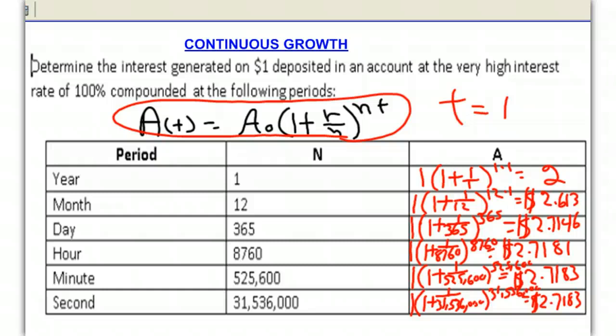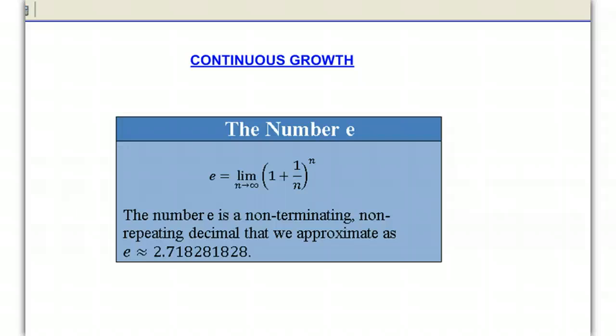It turns out this is something we call a limit, and the limit is E. So just to summarize: E is actually the limit as the denominator goes to infinity of 1 plus 1 over N, to the Nth power — which is simply what we did. We kept changing N from annually to monthly with 12, or daily which is 365, and so on. And once we did that, we got our limit, which was our number E.